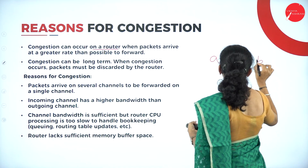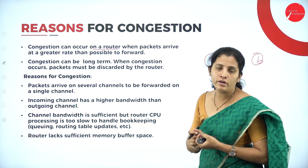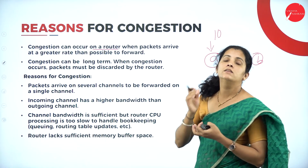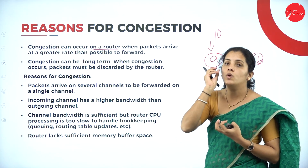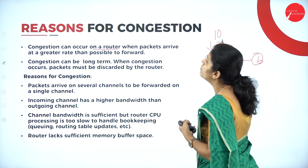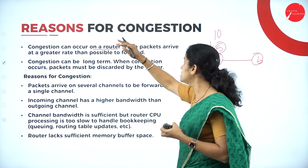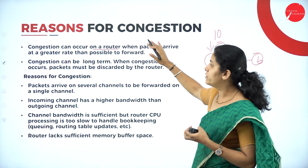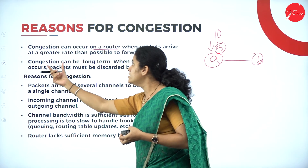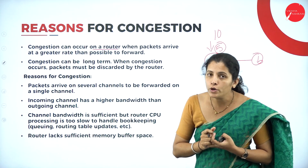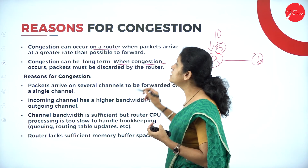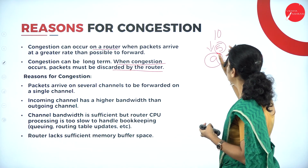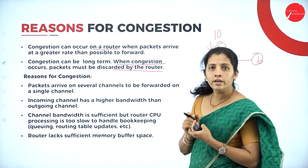Consider two routers responsible for forwarding packets. Router A is going to receive packets of size 10, but router A is only capable to transfer 5 packets at a time, so we can find congestion here. Congestion occurs in a router when the packet arrival rate is greater than the rate it is possible to forward.